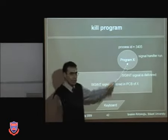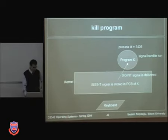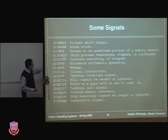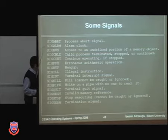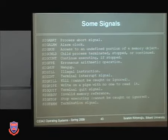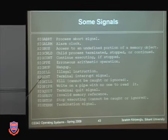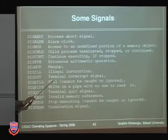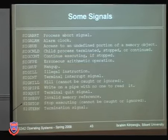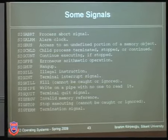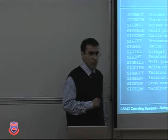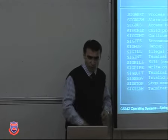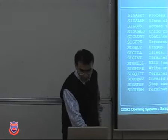There are many types of signals that can be sent between processes or from the kernel to a process. For example, the kernel sends a SIGILL signal if a process tries to execute an illegal instruction. By default, the kernel terminates the process, but you may choose to handle that signal yourself. This concludes our discussion of signal handling. We will continue with other topics in the next lecture.